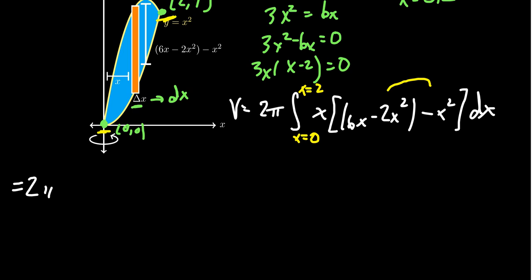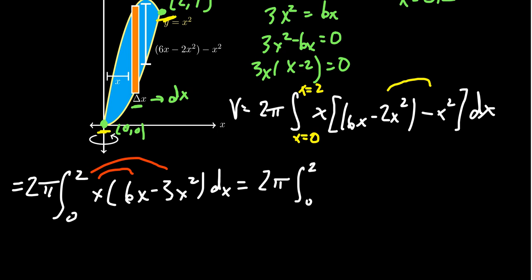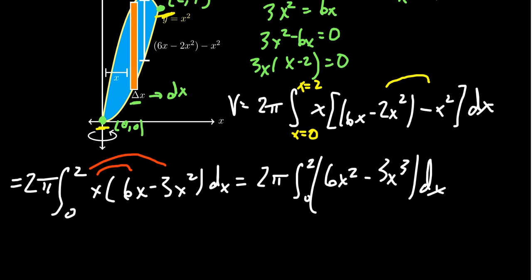We're going to get 2 pi, the integral from 0 to 2. We get x times 6x minus 3x squared. Distribute the x. We could try some type of u substitution, but I think distribution is probably simpler here. We get 6x squared minus 3x cubed. Integrate with respect to x. Our function is now prepped for surgery.